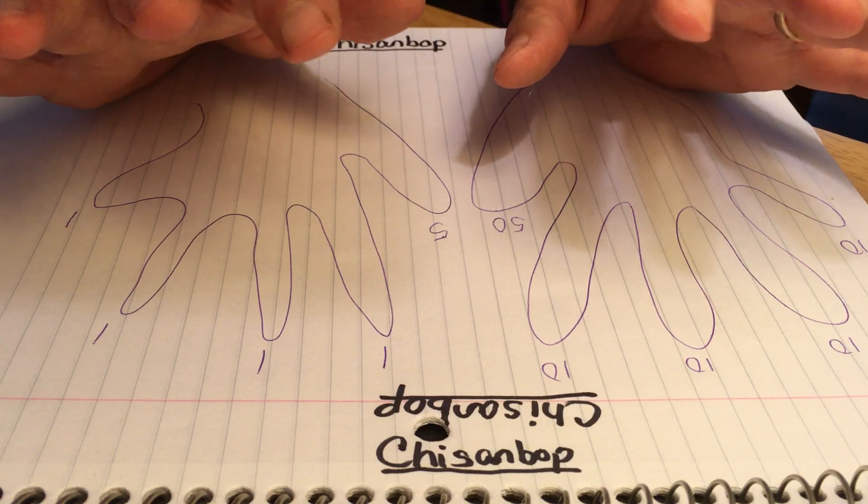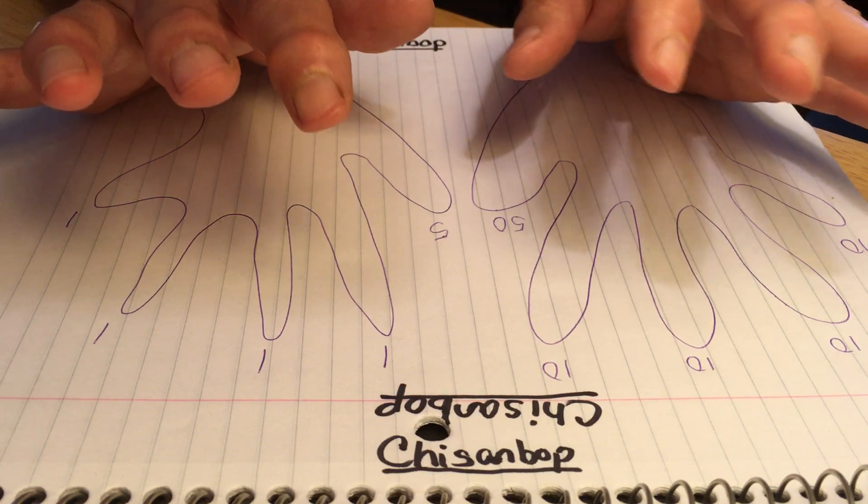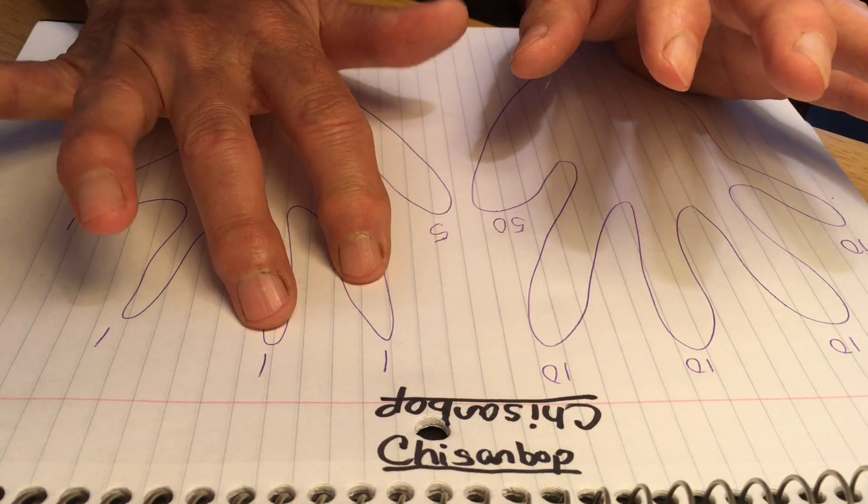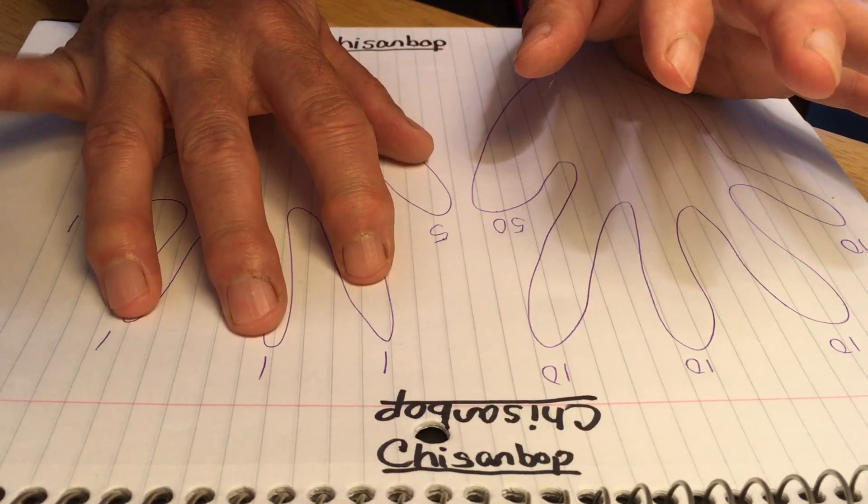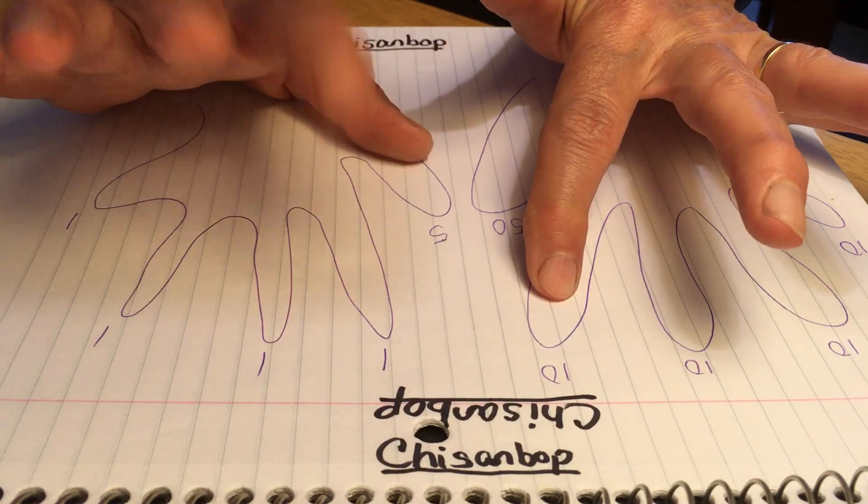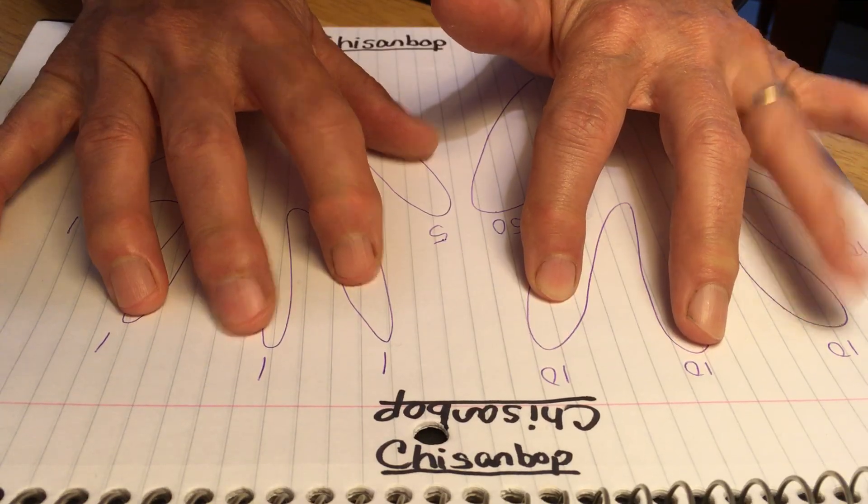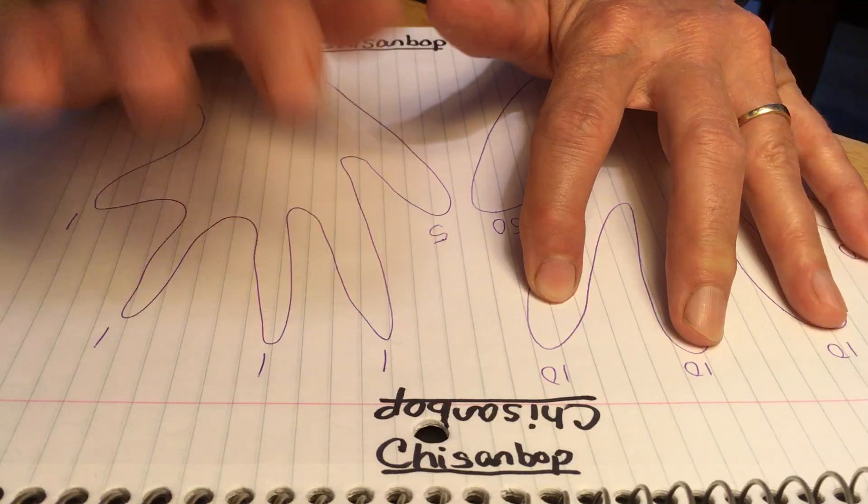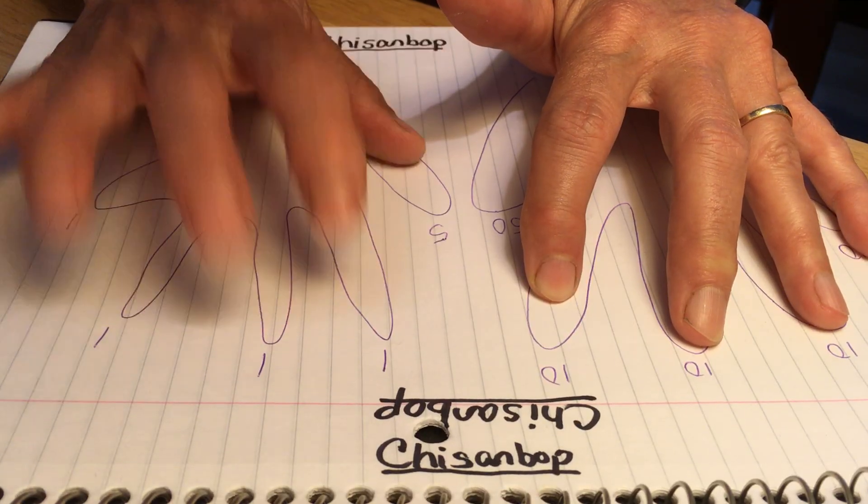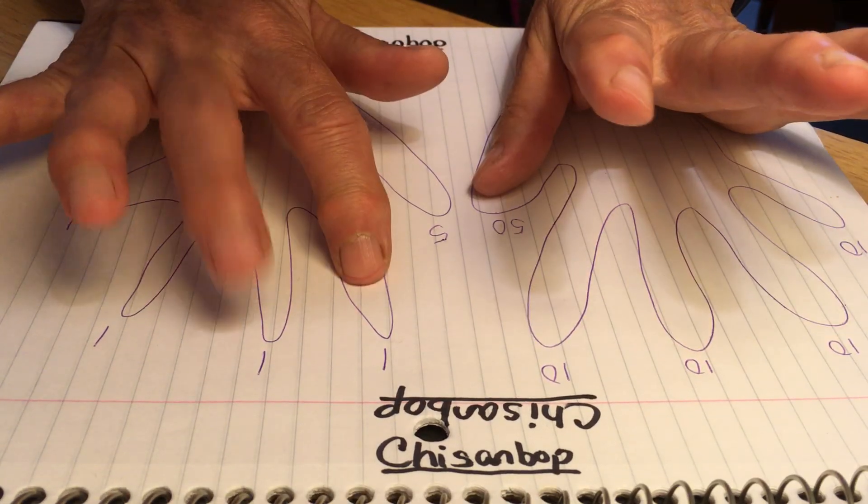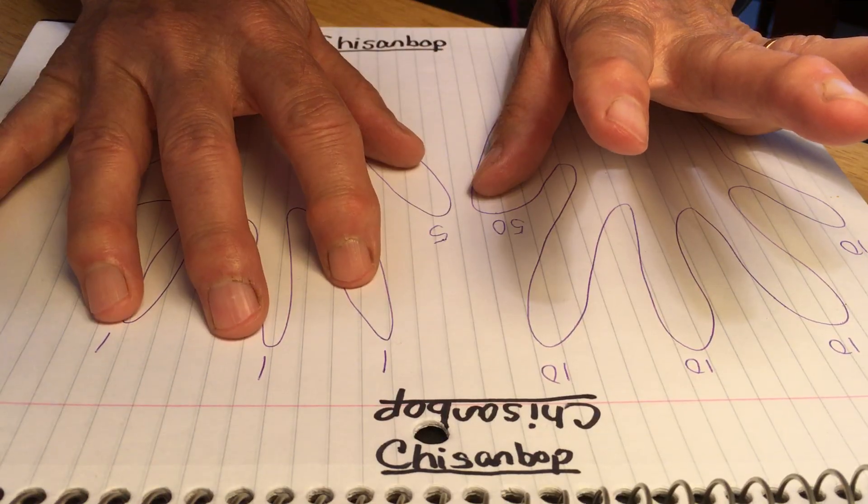Now to get good at Chisanbop, a good thing to do is to enjoy doing this pattern first. I'm now on 20, 30, 39, 40, 1, 2, 3, 4, 5, 6, 7, 8, 9, 50, 1, 2, 3, 4, 5, 6, 7, 8, 9, 60. Just enjoy that pattern for a while. It's really enjoyable.